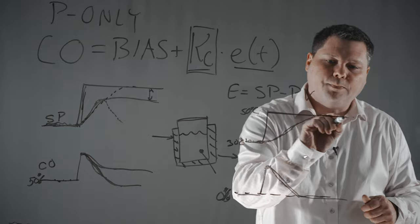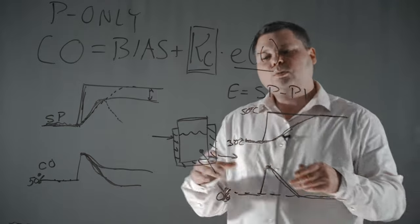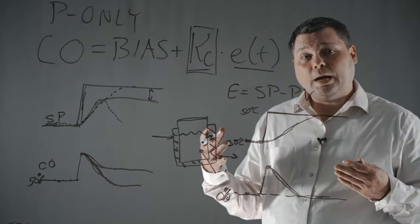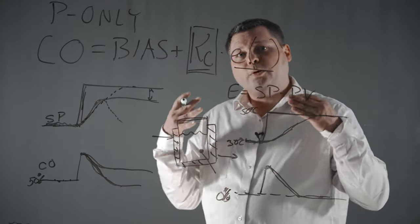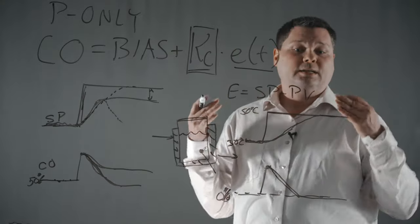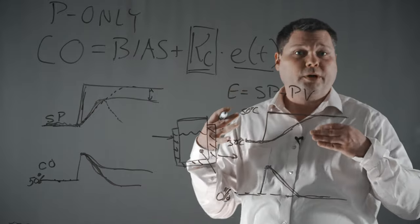So by moving it back to zero here, we actually have a balanced system. So this would be true for some batch temperature applications, some level control applications, systems where there's really only one steady type condition, one balancing point.